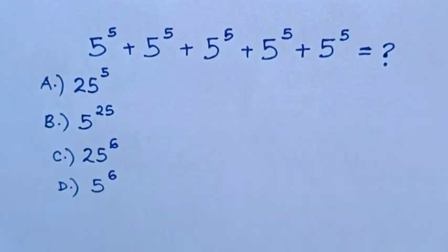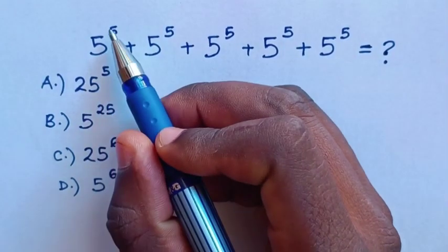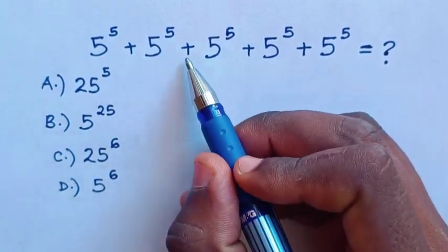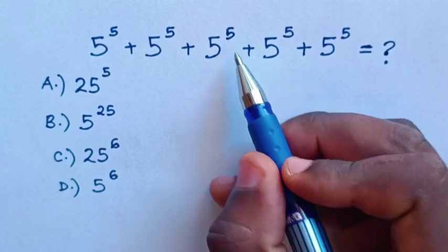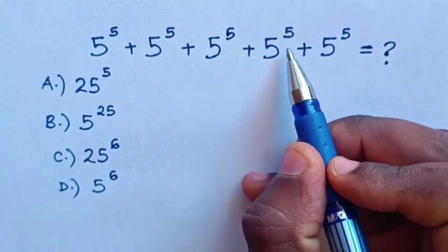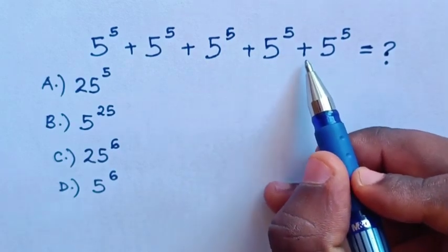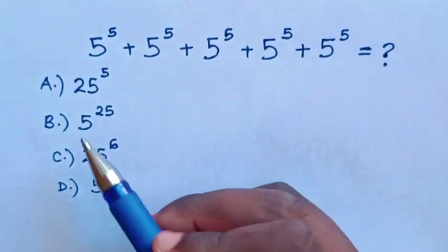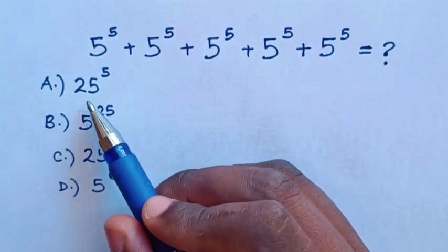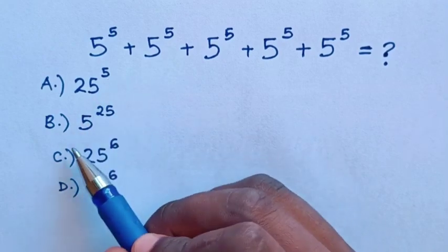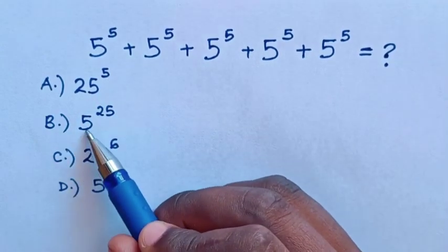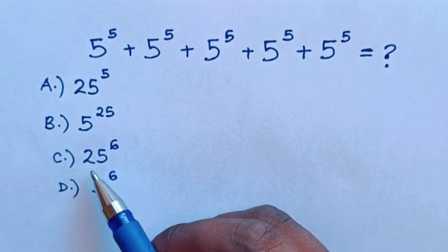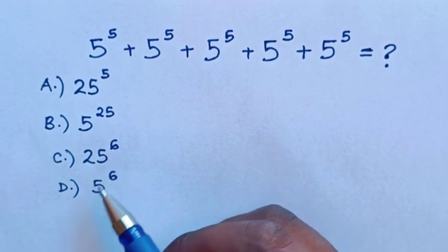Hello! How to solve 5 power 5 plus 5 power 5 plus 5 power 5 plus 5 power 5 plus 5 power 5. Choose between: a) 25 power 5, b) 5 power 25, c) 25 power 6, d) 5 power 6.